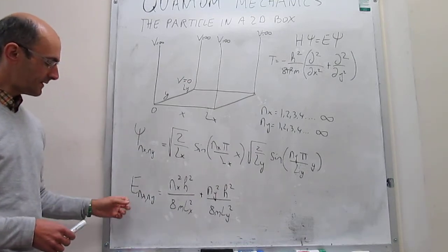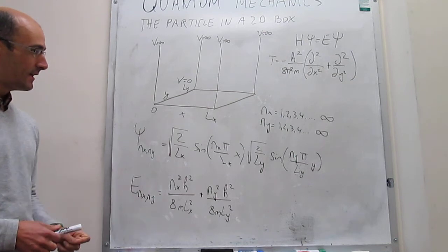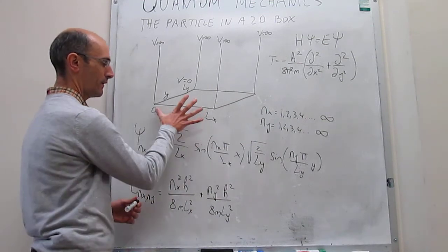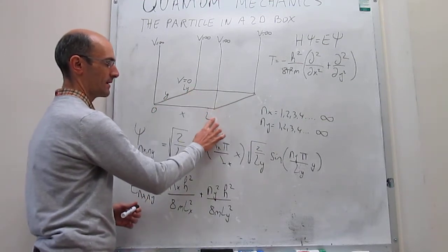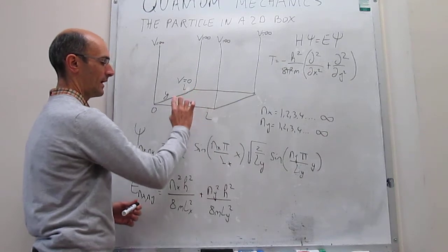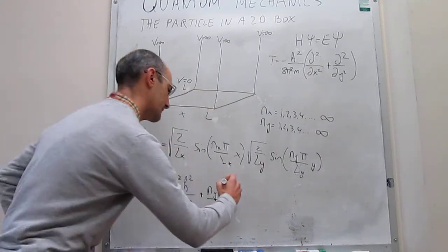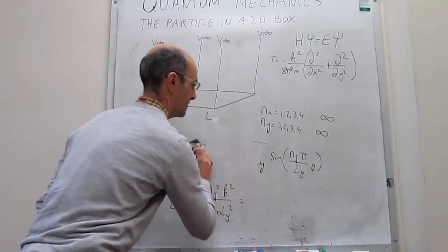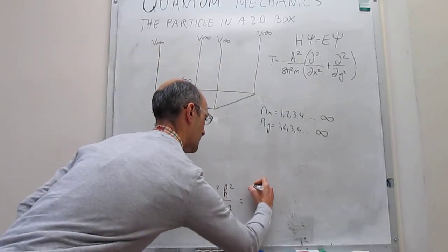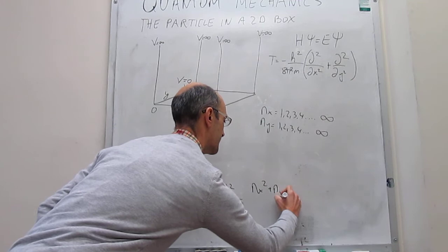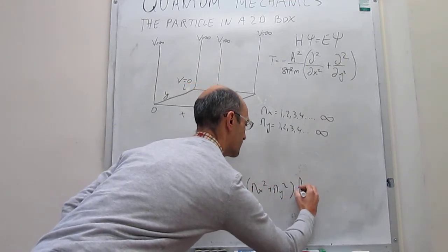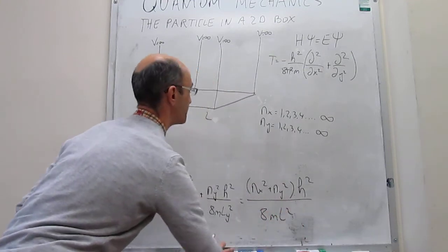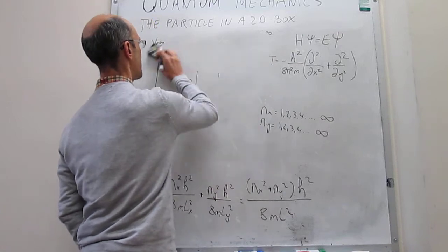We can also see something interesting that happens to the energies if we make the box square. If we make the box square, the length along the x-axis and along the y-axis is the same, so we can simply call it L. Then the energies are going to be (nx² + ny²) times h² over 8mL², and again those quantum numbers can vary independently.